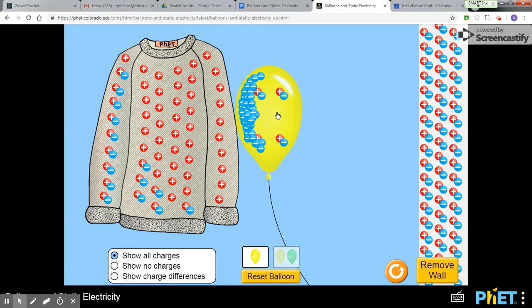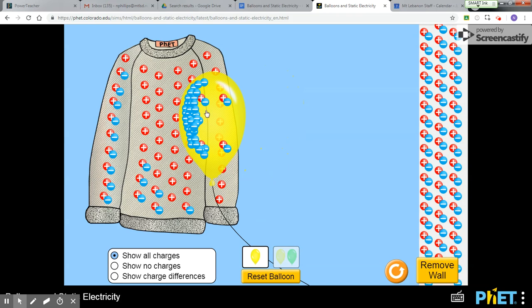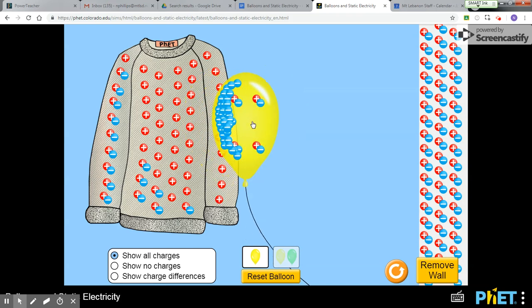So yeah, we got some pretty good attraction between this positively charged sweater and negatively charged balloon. We're going to bring the negatively charged balloon close to the neutral wall.